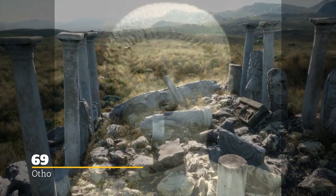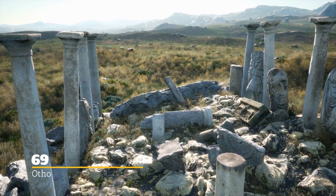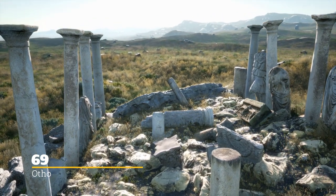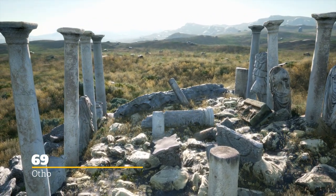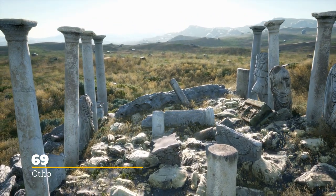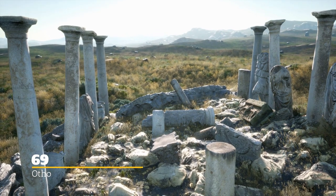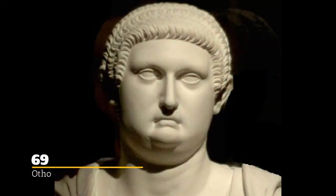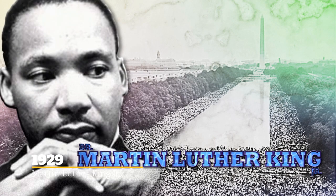Unfortunately, Otho didn't know what he was in for, and the job was a lot bigger and more involved than he had anticipated. His reign as the second emperor in the Year of Four Emperors would only last 91 days, and we'll surely talk about that again when it rolls around.